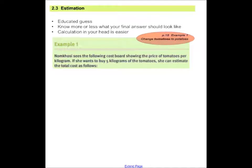Estimation. Estimation is just an educated guess. You need to know how much, more or less, your final answer would be. You use this skill often, especially when you're at the shops. You go shopping and you need to know whether the money in your purse will cover the items that you've selected to buy. The last thing you want to happen is to get to the till and then you can't pay for your purchases. First of all, go to page 18, Example 1. Change tomatoes to potatoes.